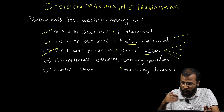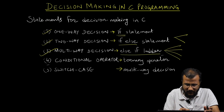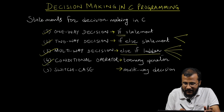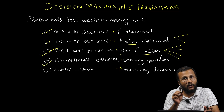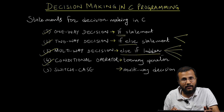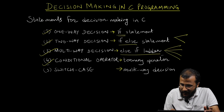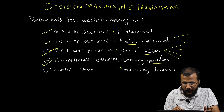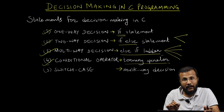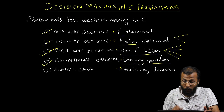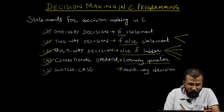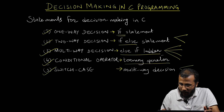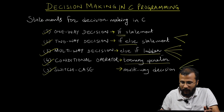We'll discuss the else-if ladder in more detail in subsequent lectures. Number four is the conditional operator — also known as the ternary operator, which has three operands. We'll see in a dedicated lecture how it works. The fifth is the switch case, also used for multi-way decision-making.